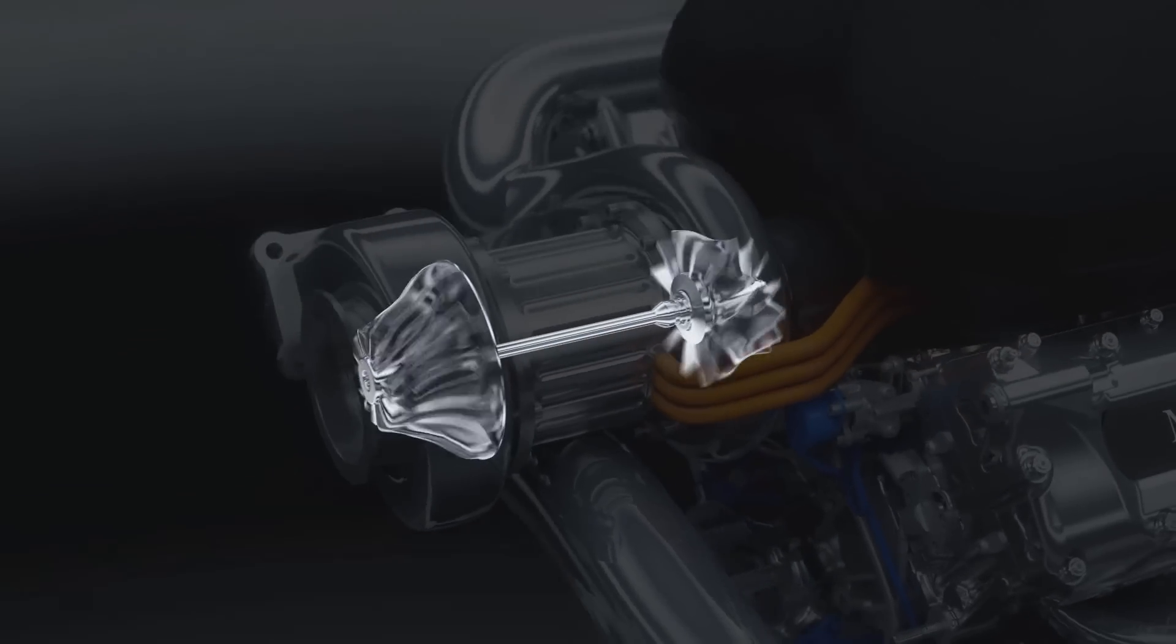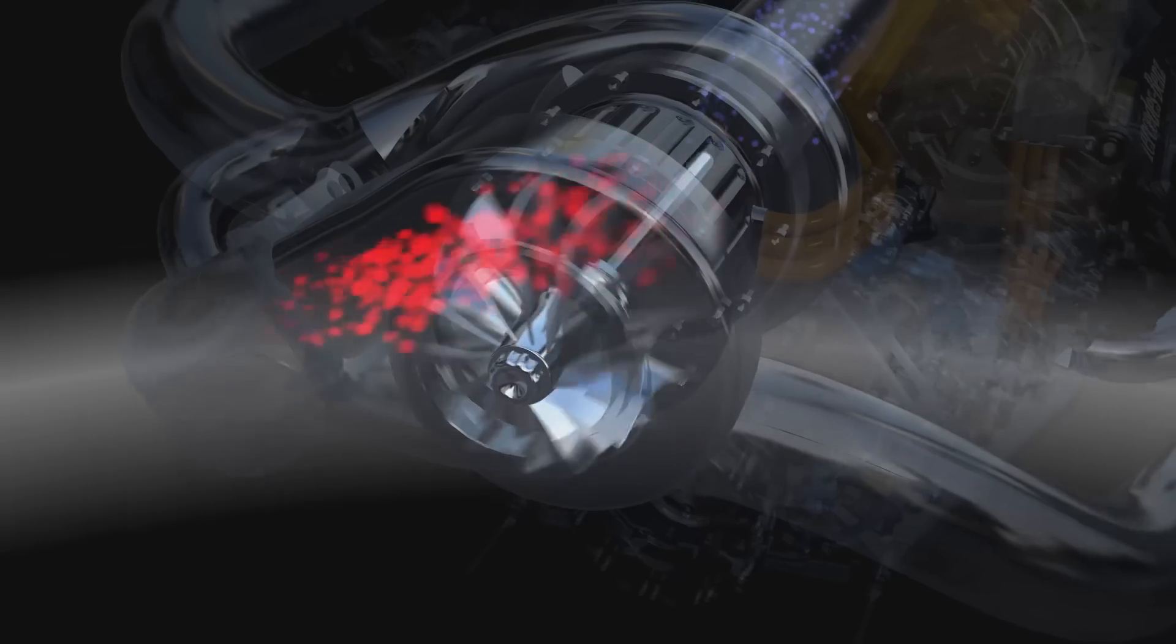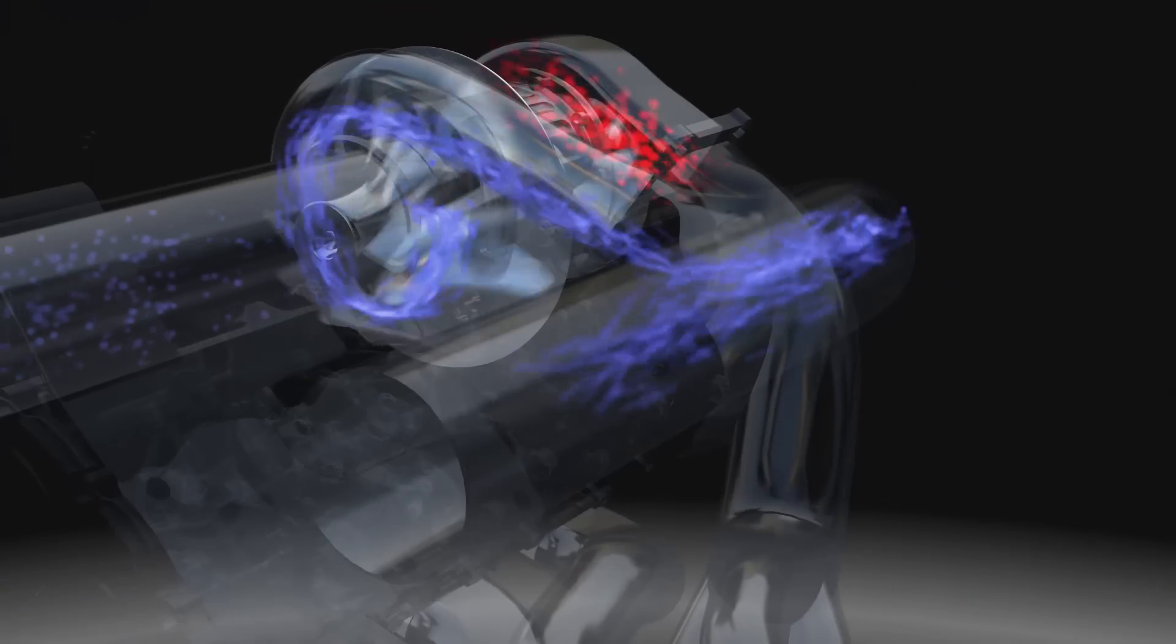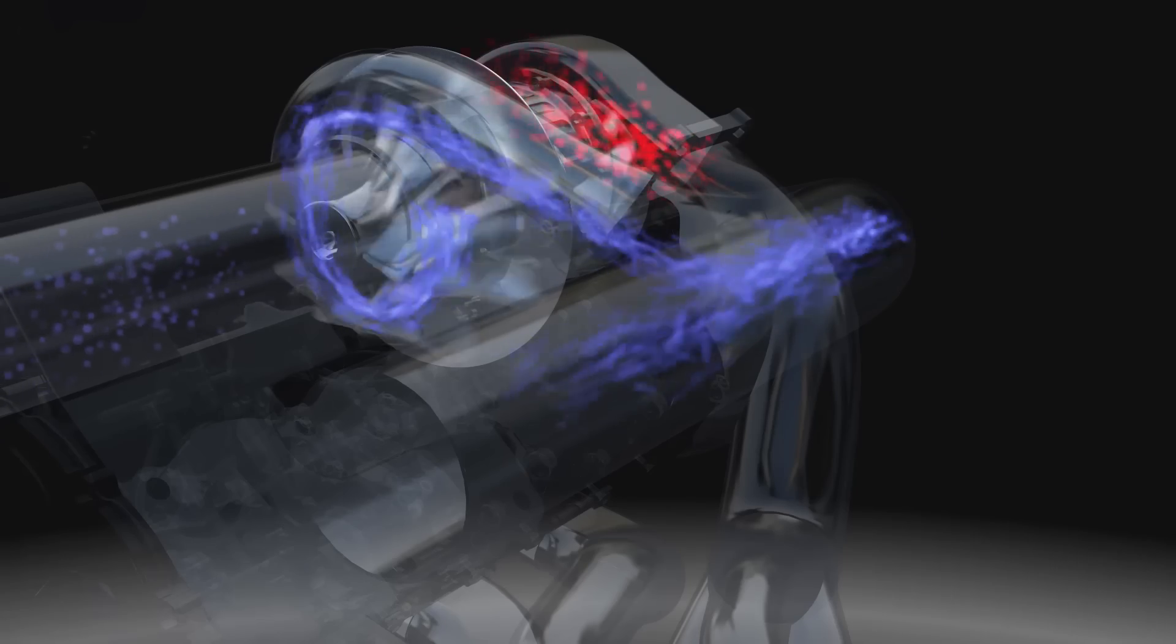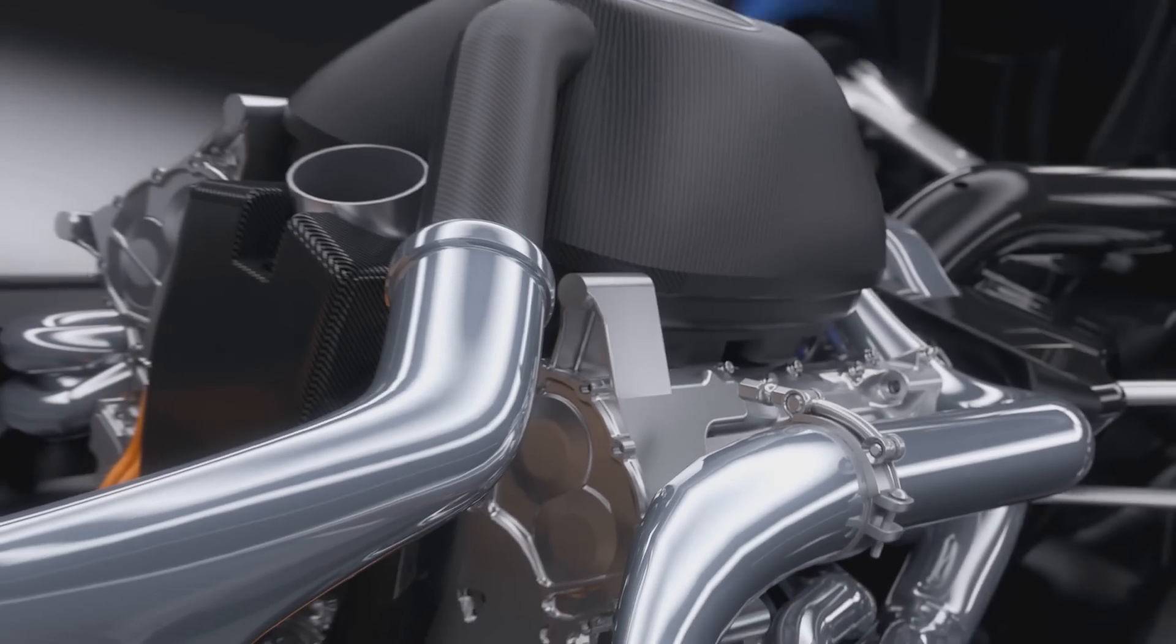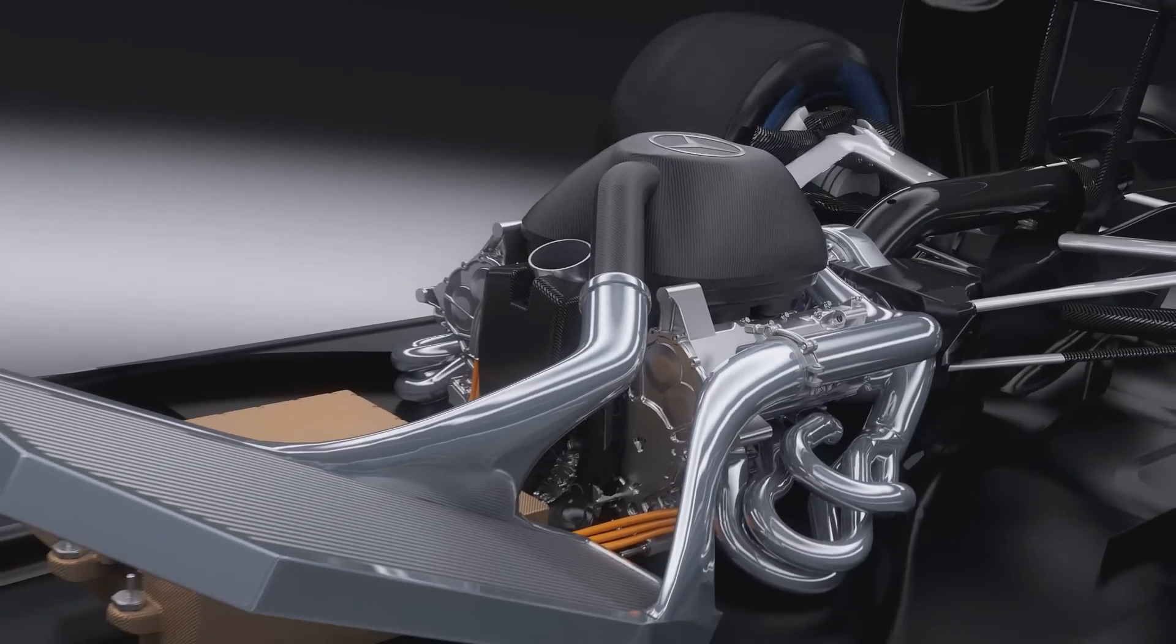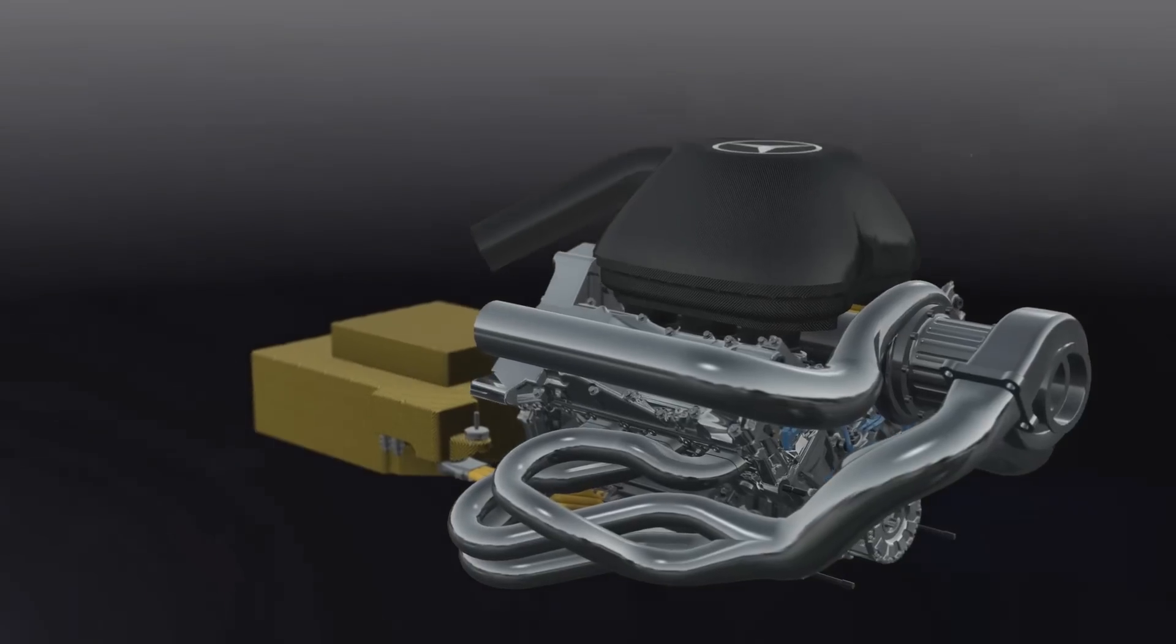It is achieved with a downsized 1.6-litre turbo hybrid engine. The turbo uses exhaust gases to drive a compressor to push more air and therefore more oxygen into the engine. Together with high-pressure direct fuel injection, this makes combustion more efficient—more power using less fuel.